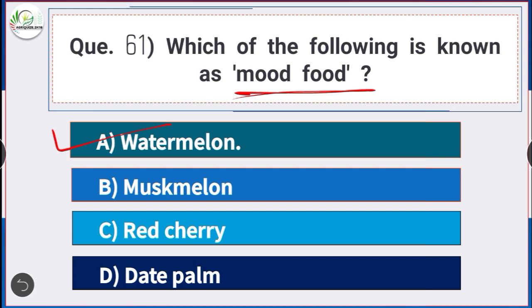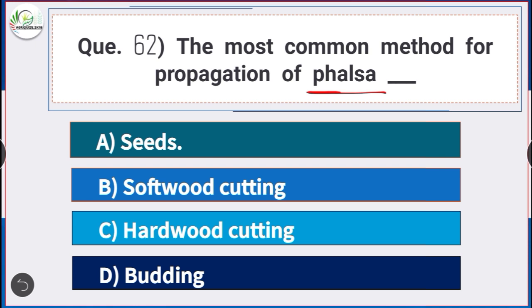Question number 62: The most common method of propagation of falsa is — answer option A — seeds. The most common method of propagation of falsa is seeds.